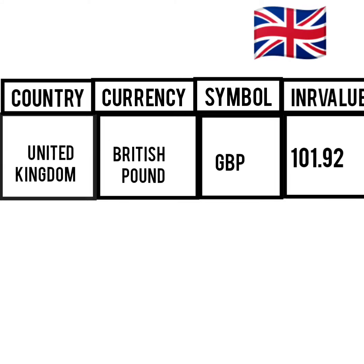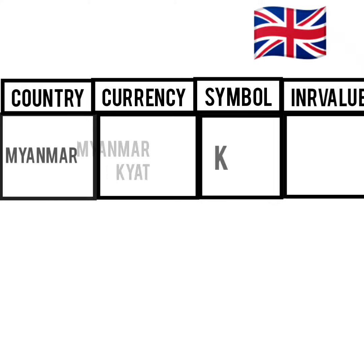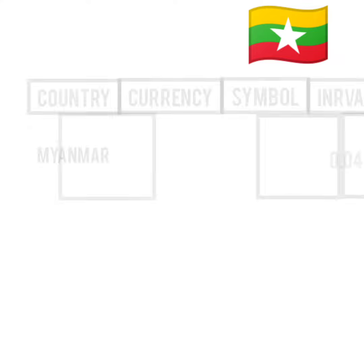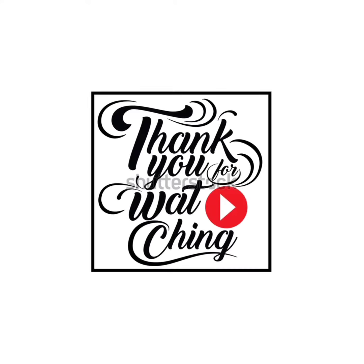United Kingdom, British Pound, GBP: 101.92. Myanmar, Myanmar Kyat, K: 0.045. Thank you for watching my video.